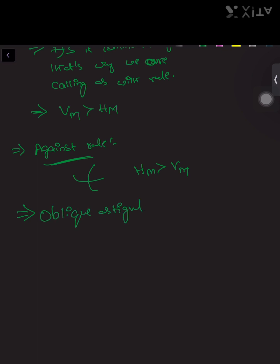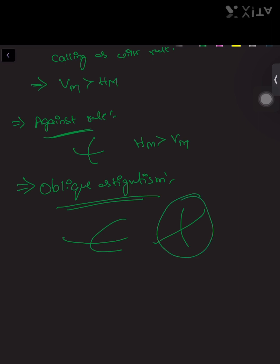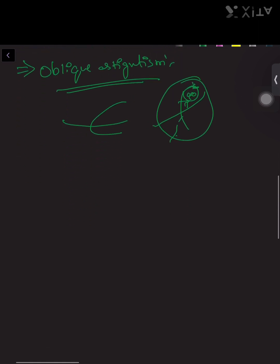In oblique astigmatism, both rays are obliquely placed, but they are still 90 degrees to each other — so it remains a type of regular astigmatism.